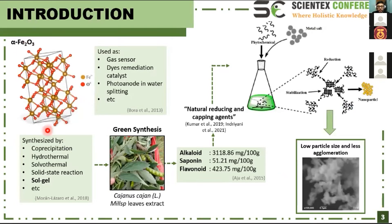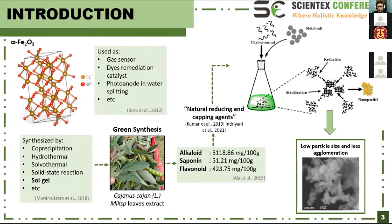Alpha Iron Oxide, or Hematite, is an n-type semiconductor and is the most stable iron oxide. It is a low-cost and abundant material. Also, it is active under visible irradiation. Because of its properties, Hematite has been applied as a gas sensor, dye remediation catalyst, photoanode in water splitting, etc.